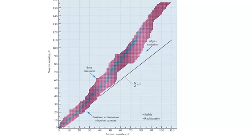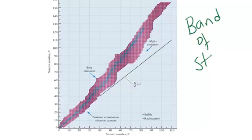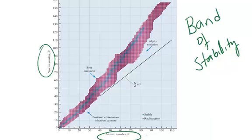This is a graph called the band of stability. It gives us a look at the relative stability of different isotopes of different elements. The graph is a plot of neutron number versus atomic number. And remember, atomic number is the number of protons in the nucleus, and here they're talking about the number of neutrons in the nucleus.